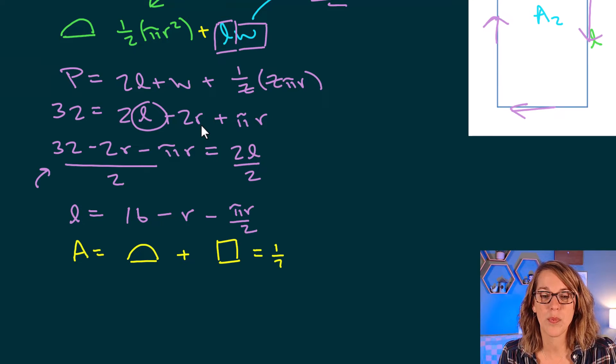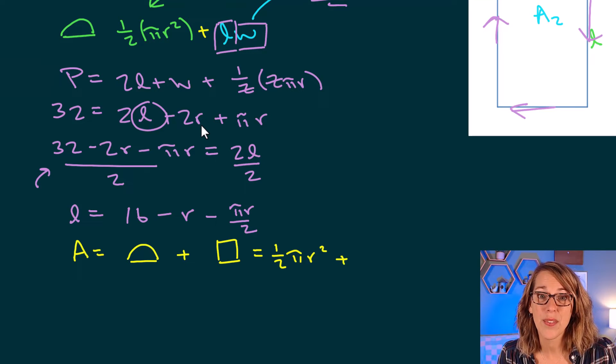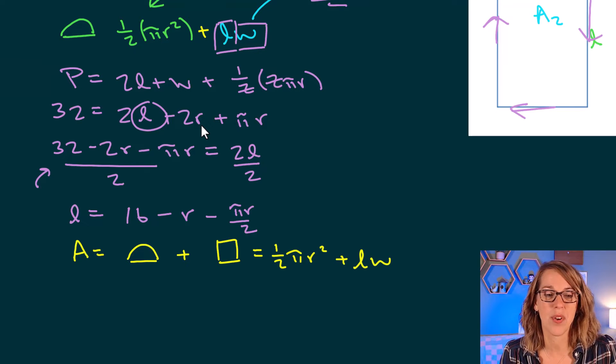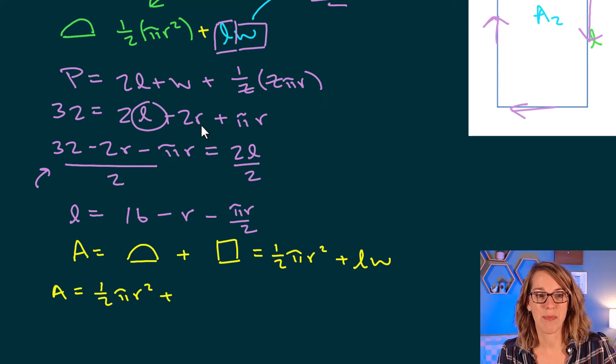So my area is equal to the area of the semicircle plus the area of that rectangle. The area of the semicircle was 1 half pi r squared, and the area of the rectangle was a length times a width. Well, putting my areas together, the area is equal to still that 1 half pi r squared plus length times width.